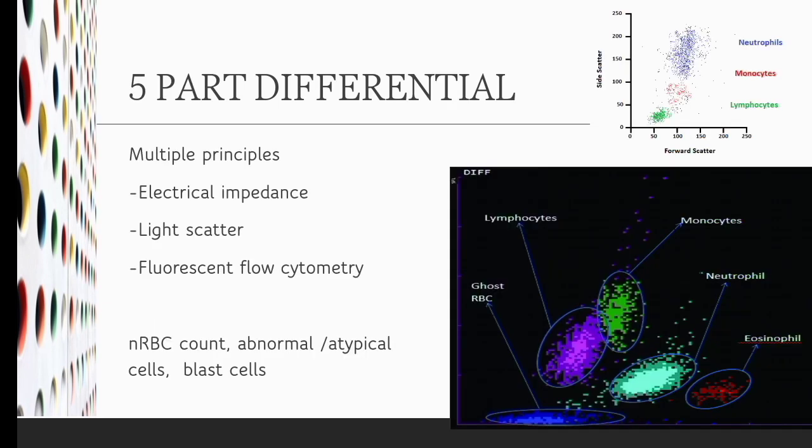The second is 5 part differential analyzer. The WBC count is differentiated into five different categories: neutrophils, lymphocytes, monocytes, eosinophils, and basophils. They are using multiple principles including electrical impedance, light scatter, fluorescent flow cytometry, etc. Some analyzers also show the different count for the nucleated RBCs and they automatically remove the total nucleated RBCs from the WBC count. In the 3 part analyzers, they are included in the WBC count, counted mainly as lymphocytes. So you have to get the correct WBC count. Some analyzers also give the flagging of abnormal cells like blast cells and large atypical cells.